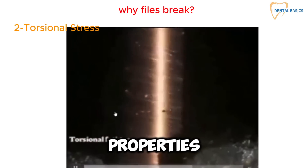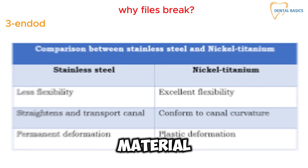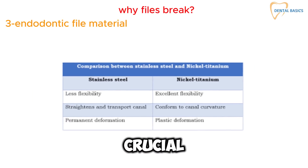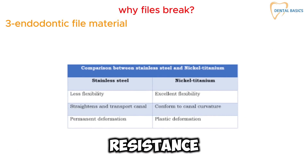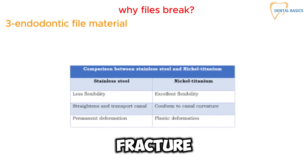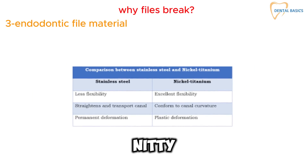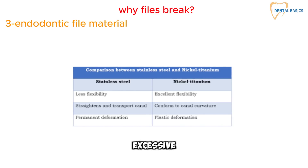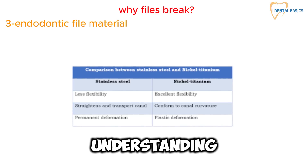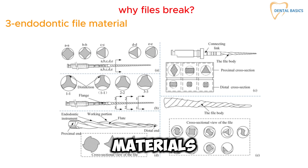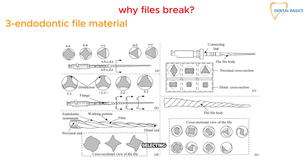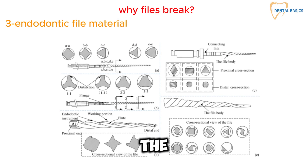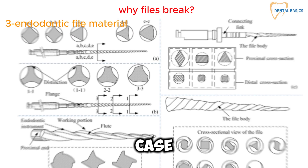Material properties also play a role. The material of the endodontic file plays a crucial role in its resistance to fracture. While nickel-titanium (NiTi) files are more flexible than stainless steel, they can still break under excessive stress. Understanding the properties of different file materials is essential for selecting the appropriate instrument for each case.